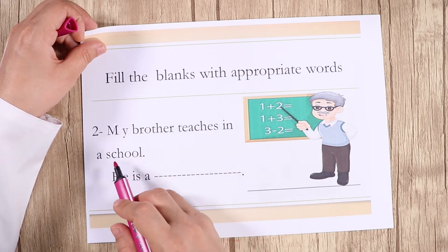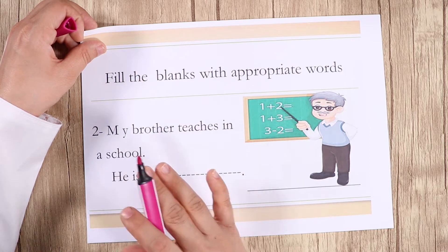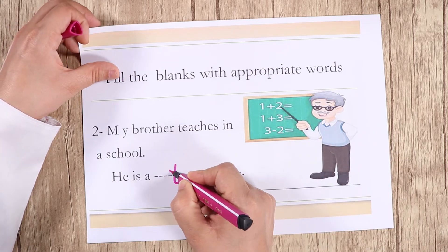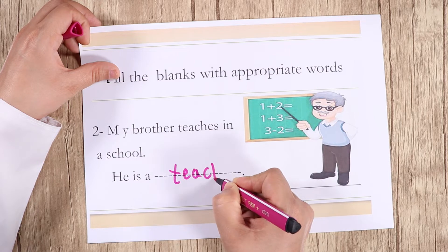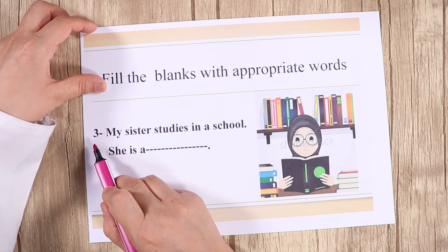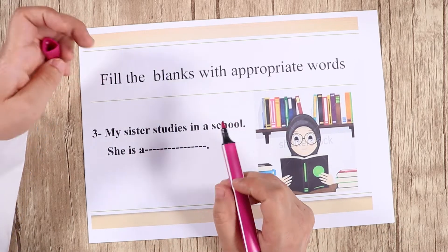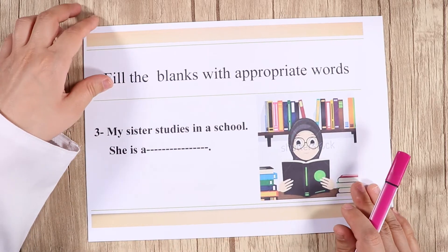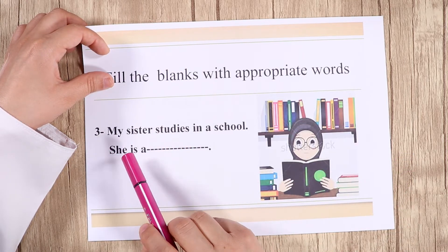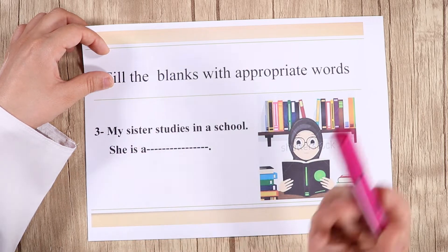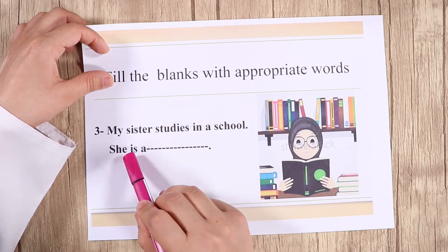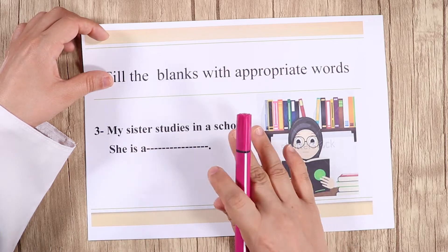Now let's see: 'My brother teaches in a school' — he is a teacher. Excellent! And the third example: 'My sister studies in a school.' Now it's your turn — what is she? She is a student, because teachers do not study, they teach. A student studies in a school. Excellent!